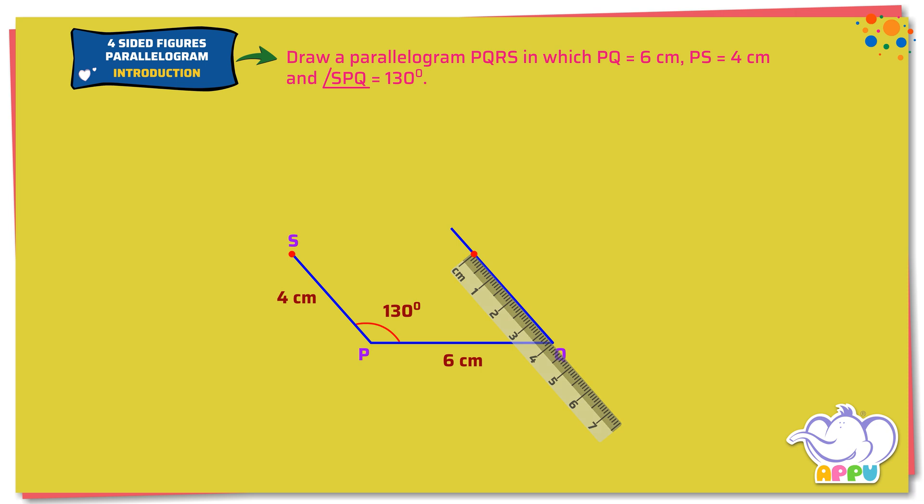Mark R on the line such that QR equals 4 cm. Join RS. We mark arrows to indicate PQ is parallel to RS and two arrows to indicate PS is parallel to QR.